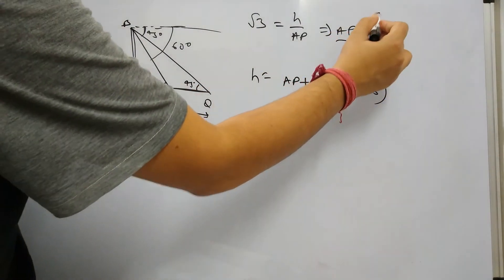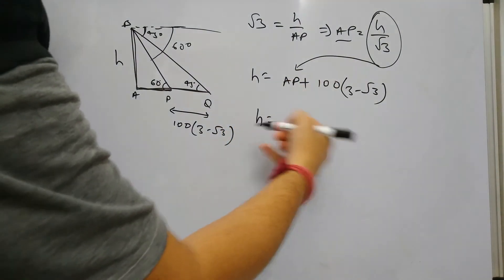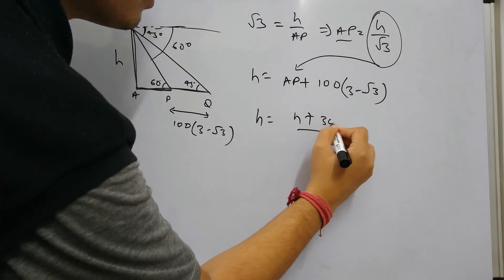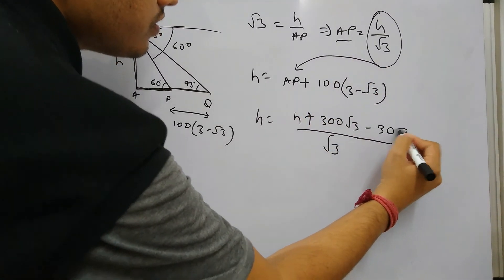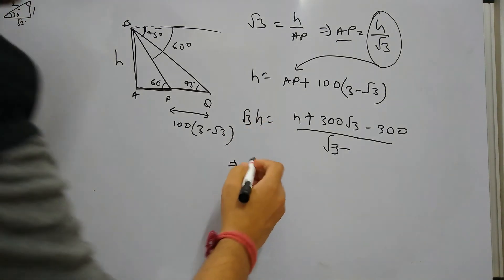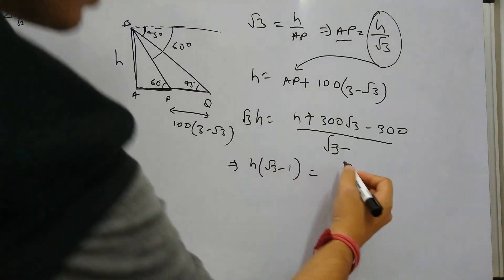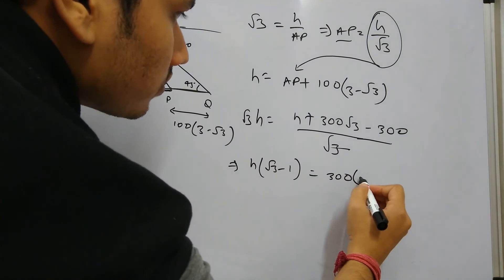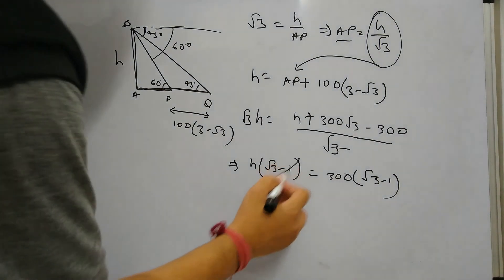From the first triangle we already derived AP = H/√3. Substituting here, H = H/√3 + 100√3. Rearranging: √3·H − H = 300, so H(√3 − 1) = 300(√3 − 1). The (√3 − 1) terms cancel, giving the height of the tower as 300 meters.